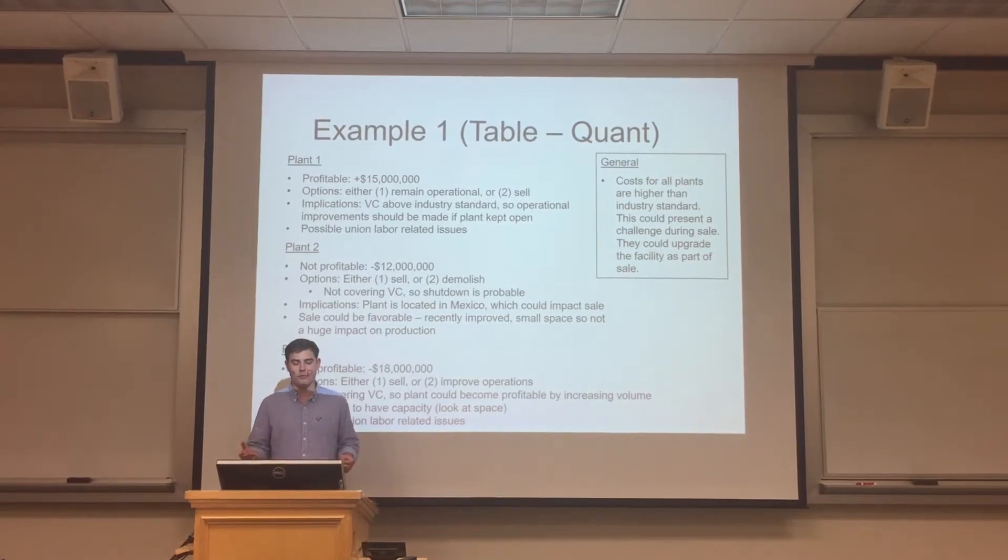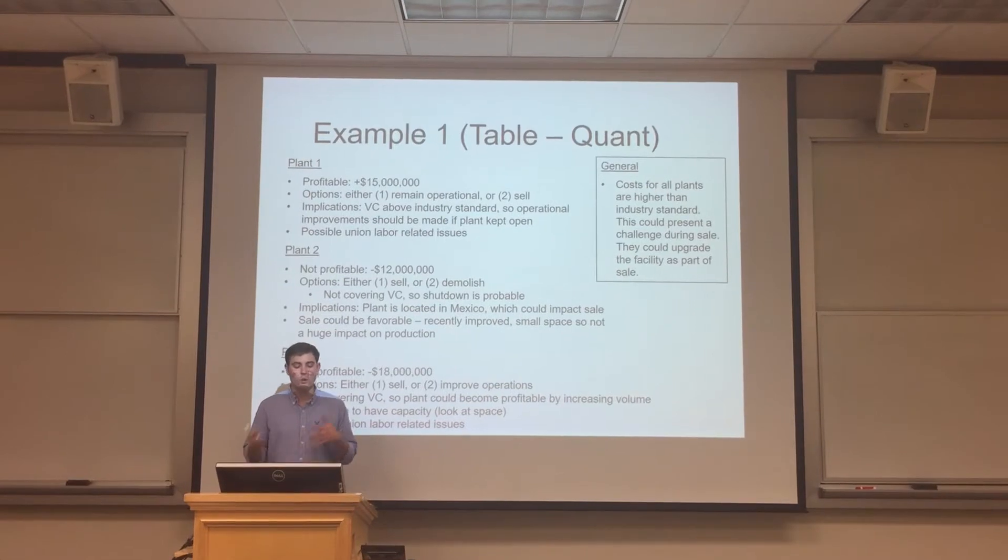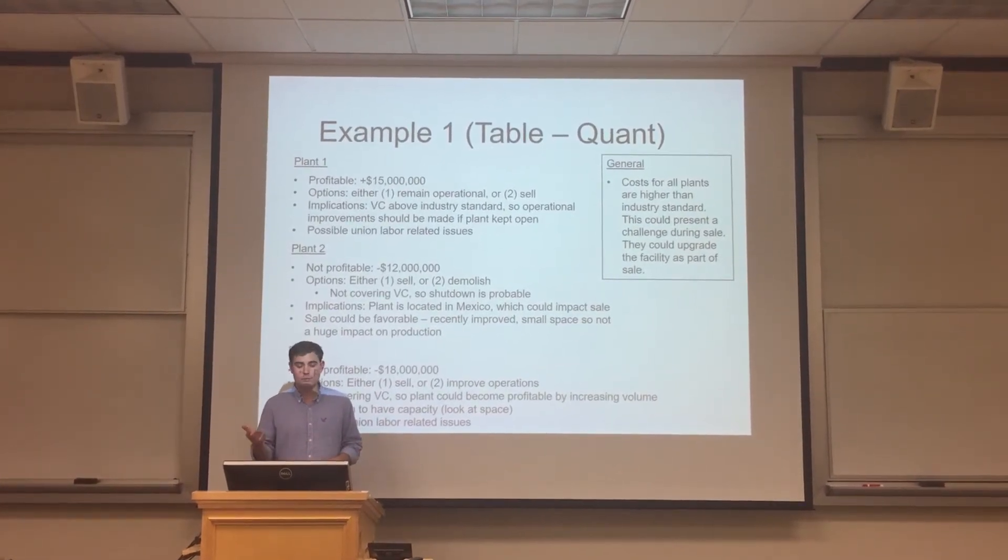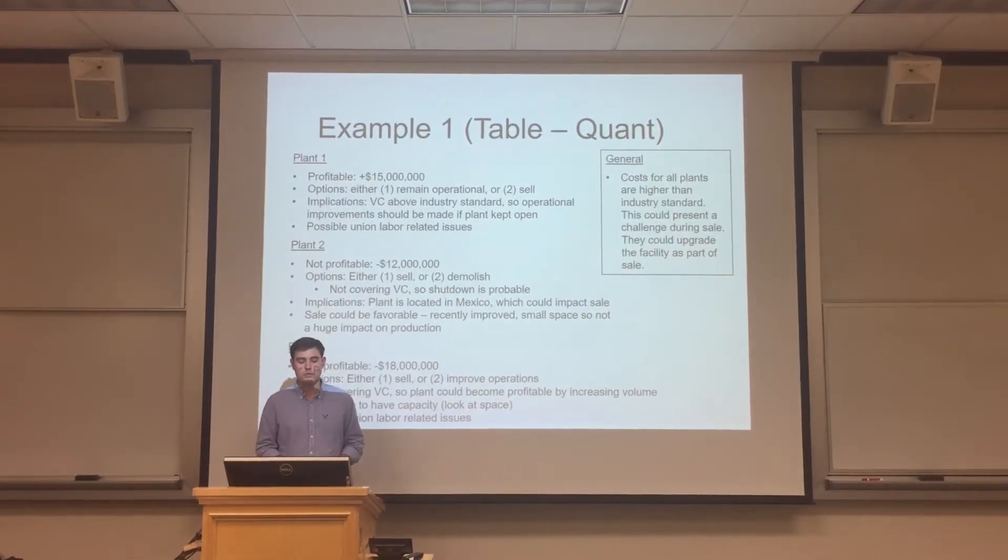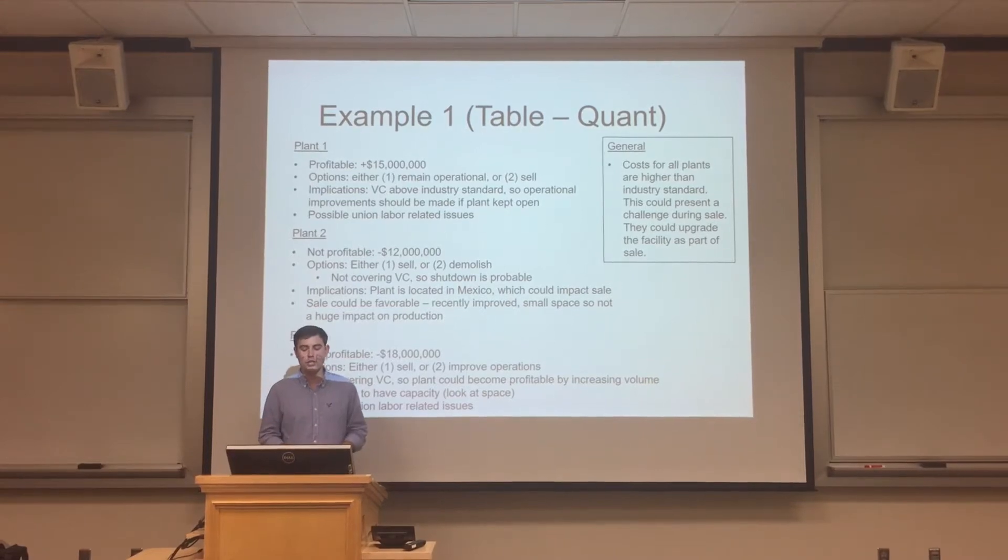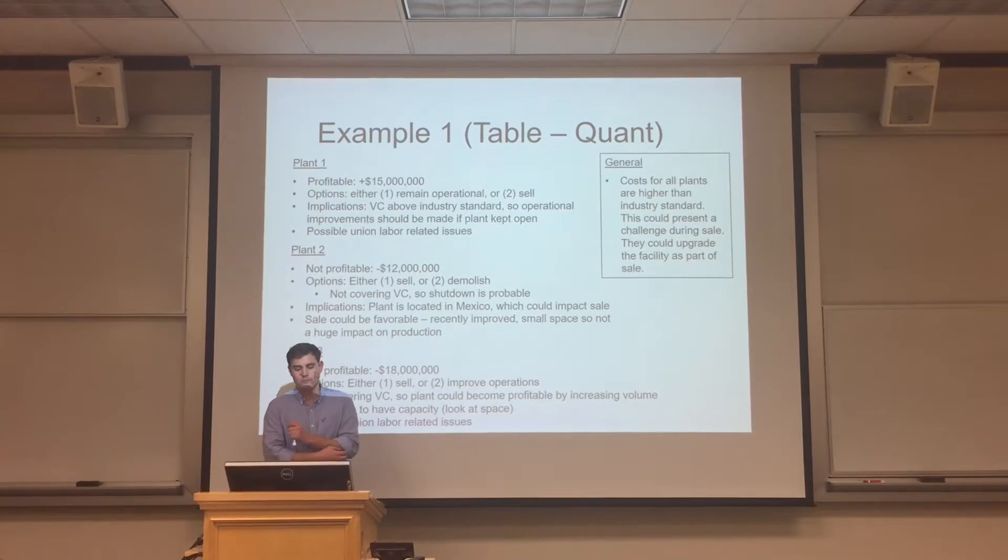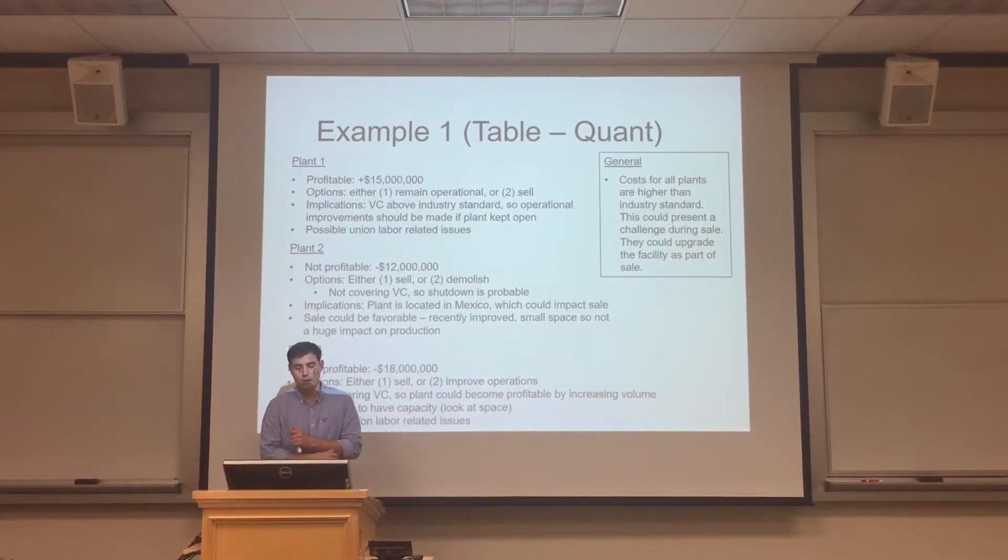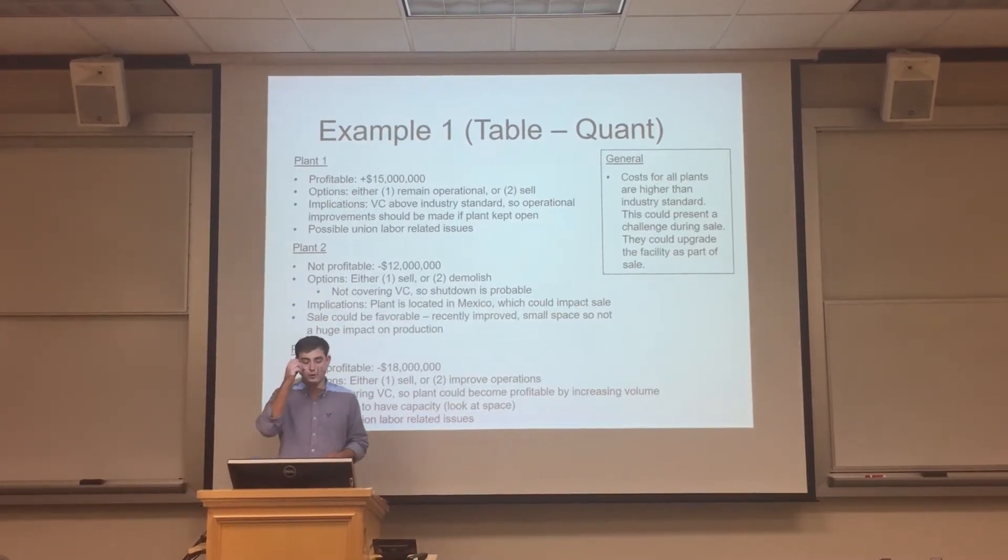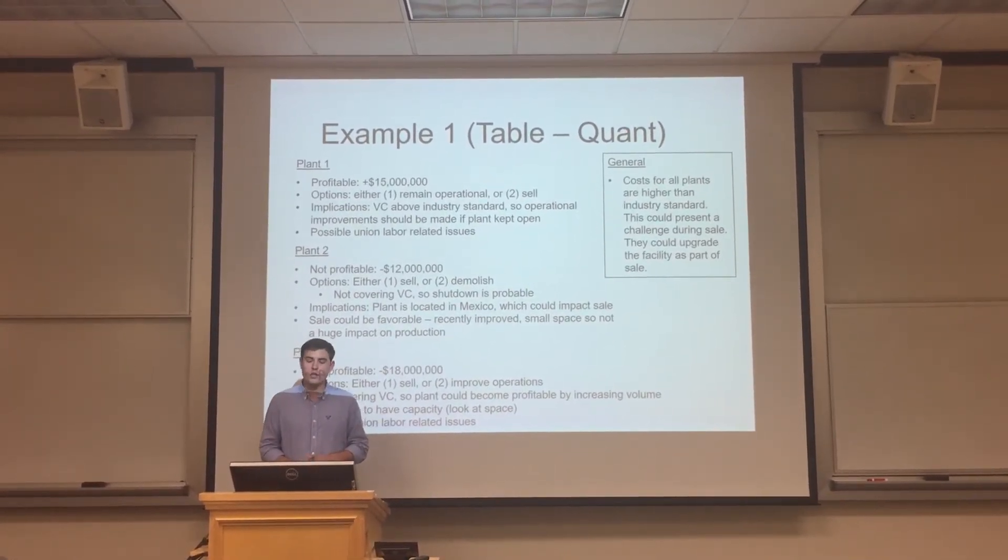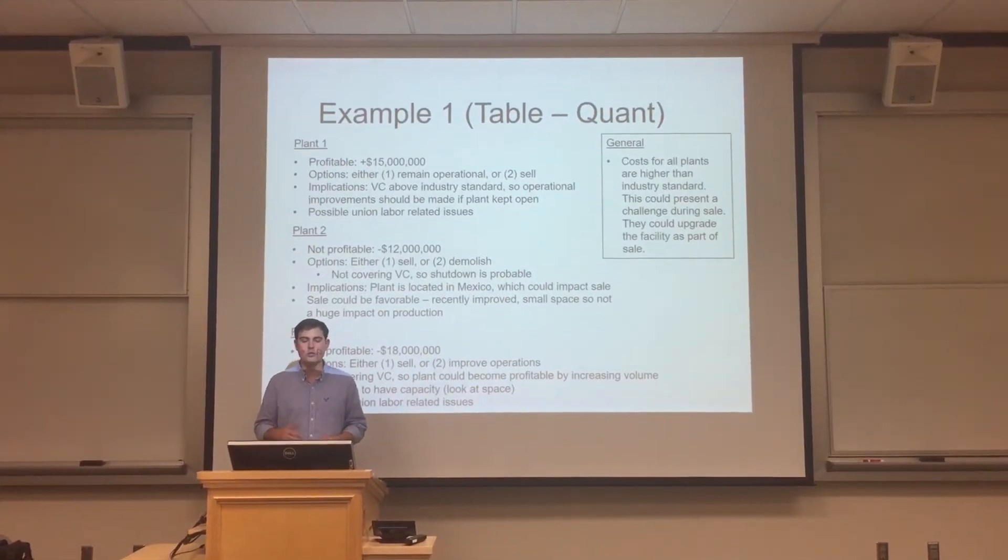Plant number two is not profitable, losing $12 million a year. That means that our client can either sell the plant or they can demolish the plant. Demolition is probable because this plant isn't even covering their variable costs. Additionally, the plant is located in Mexico, which could impact the sale. And while the sale could be favorable, one point that supports the possible sale is that the plant was recently improved in 2001, and it's also the smallest plant. So if it is sold, it wouldn't have a huge impact on production.